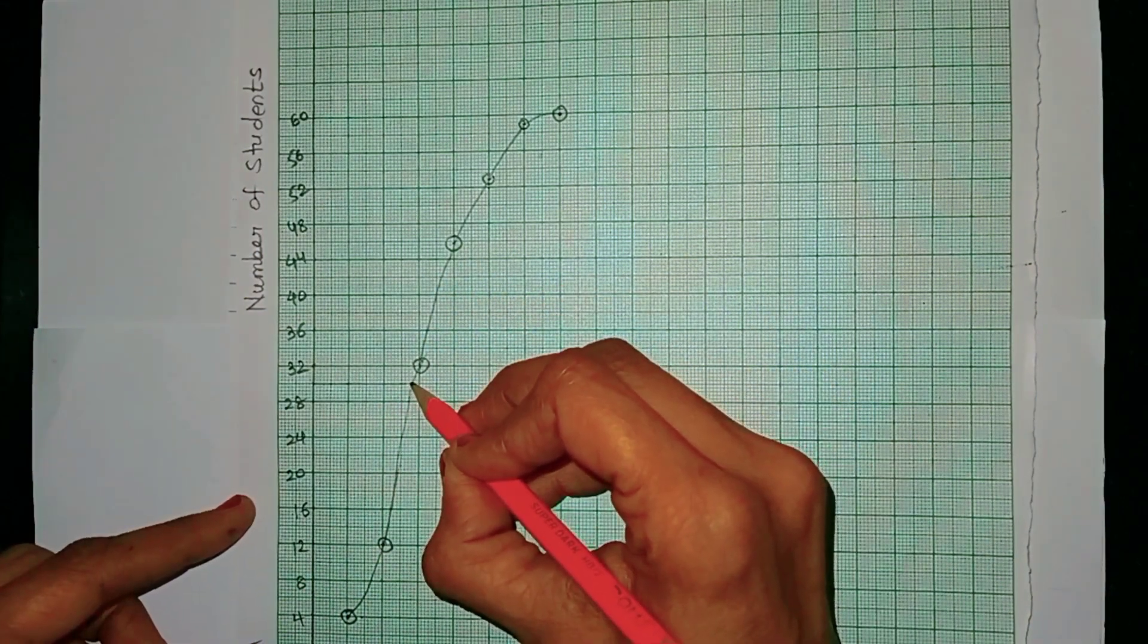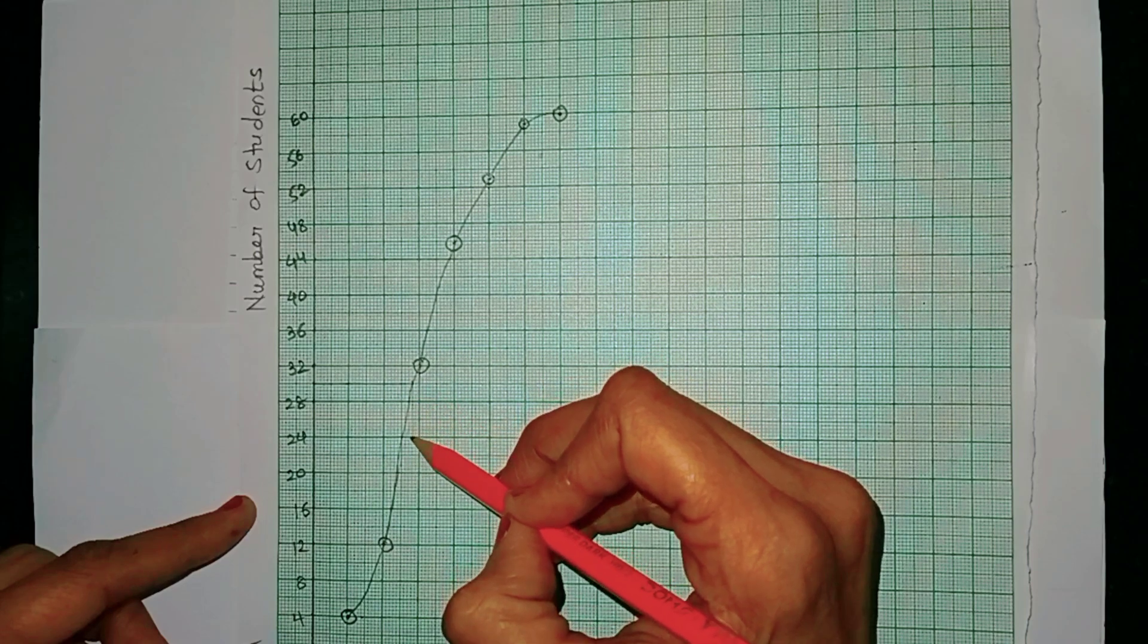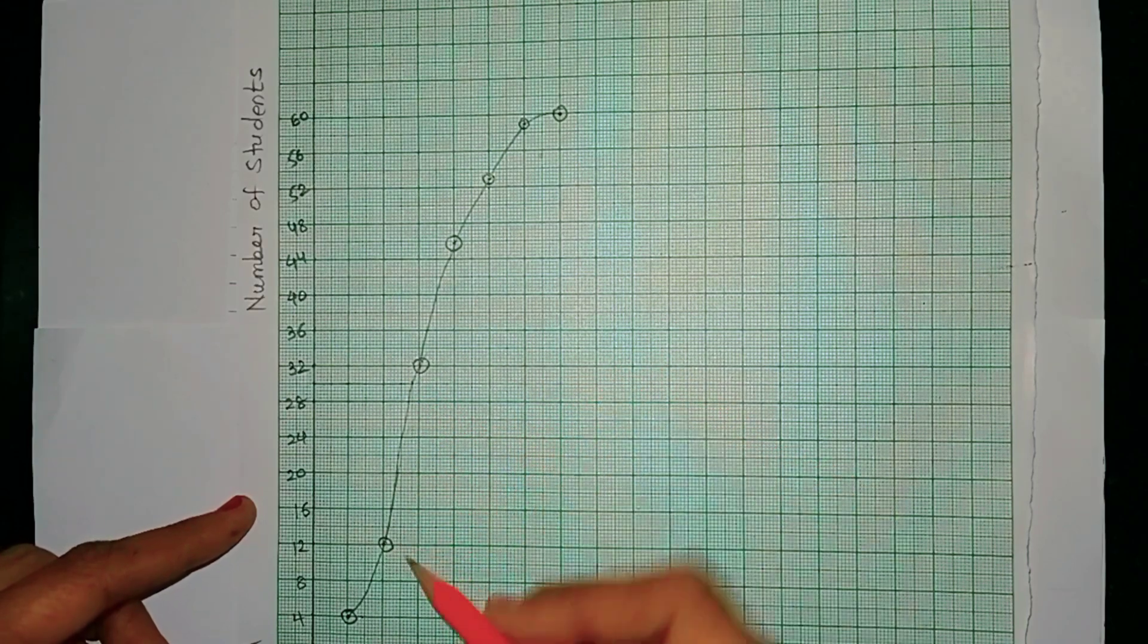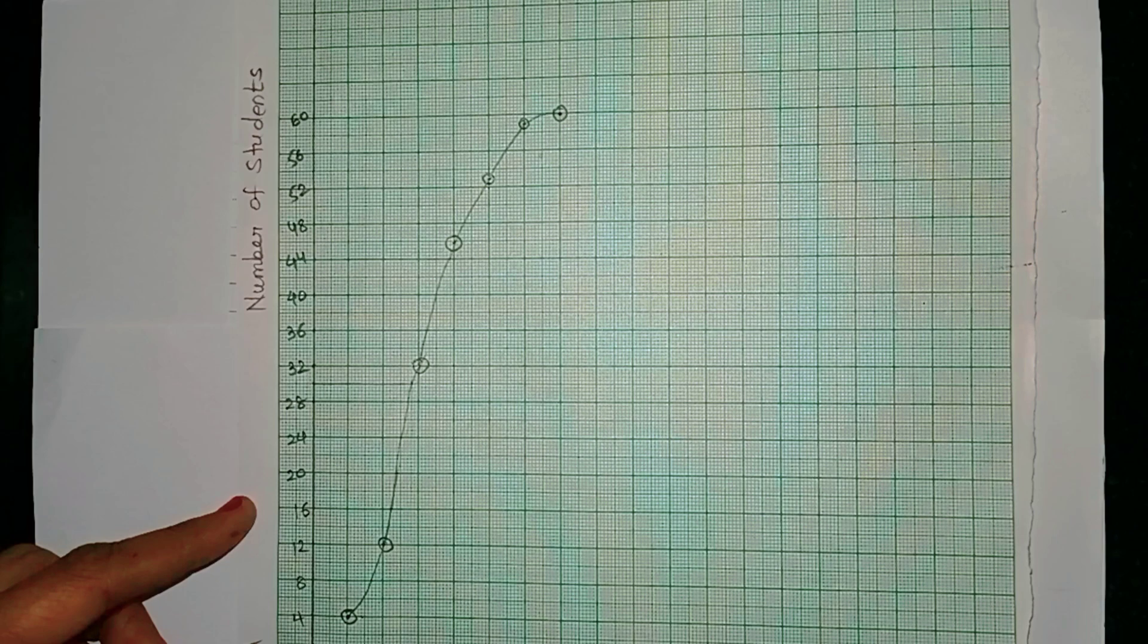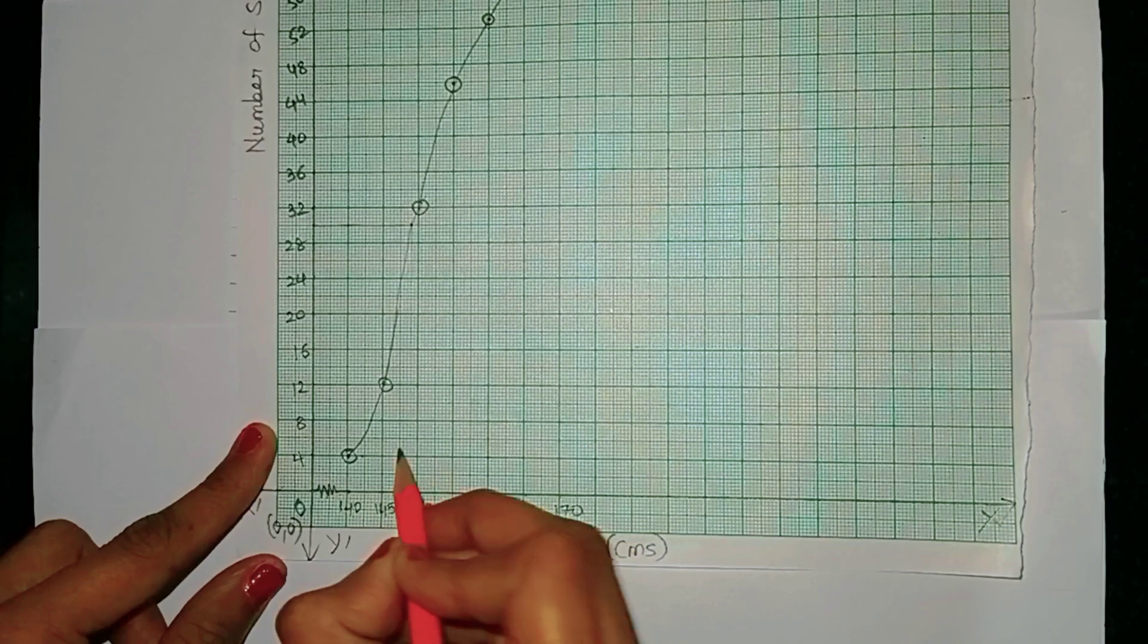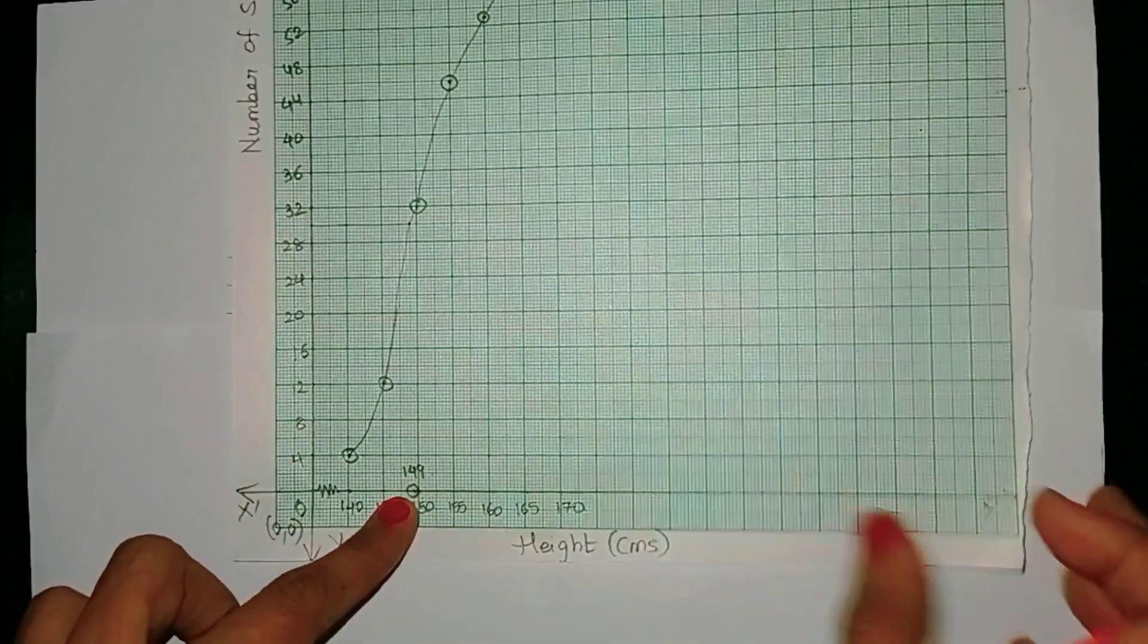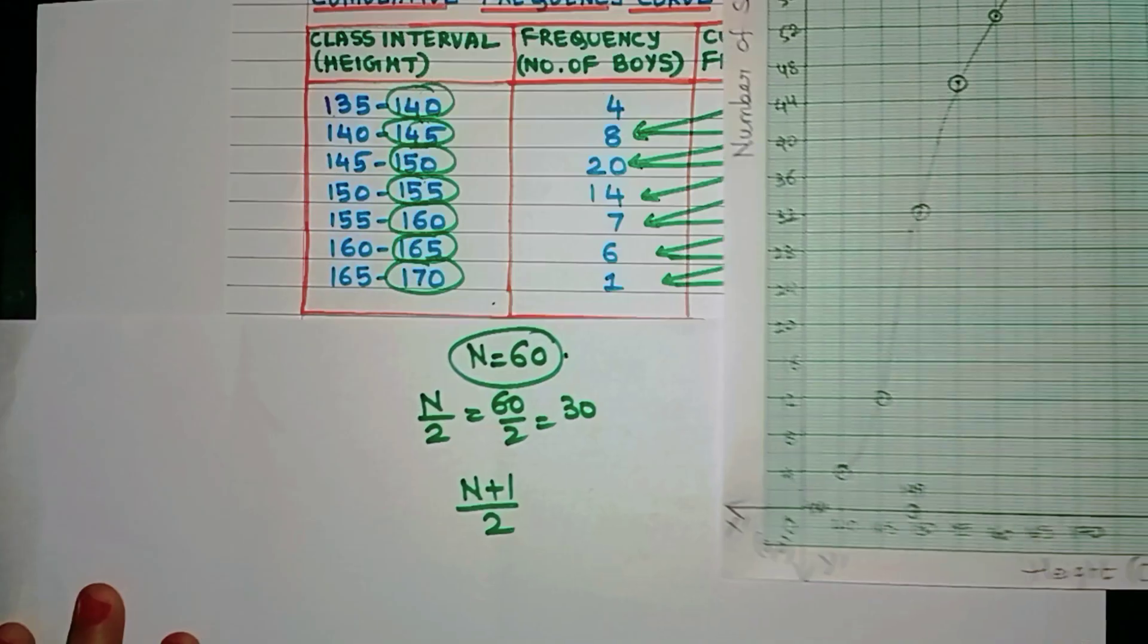Remember, you have to take the y-axis. So here is 28, 32, so this has to be 30. The 30th observation will be over here. Just trace this line till it falls on this curve. See, at this point it is touching the curve. Then just trace this vertical line all the way till it reaches the x-axis.